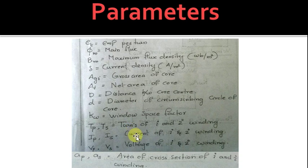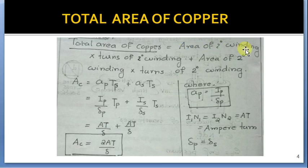Total area of copper is the sum of product of area of primary winding into turns of primary winding plus area of secondary winding into turns of secondary winding. A_c equals A_p T_p plus A_s T_s. A_p is primary current by primary current density, and A_s is secondary current by current density.